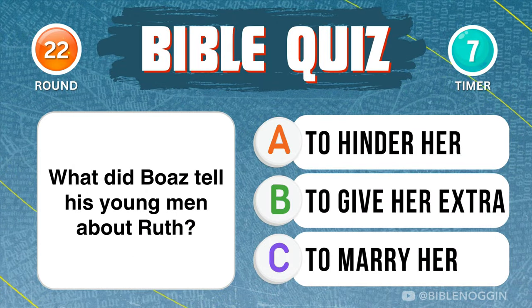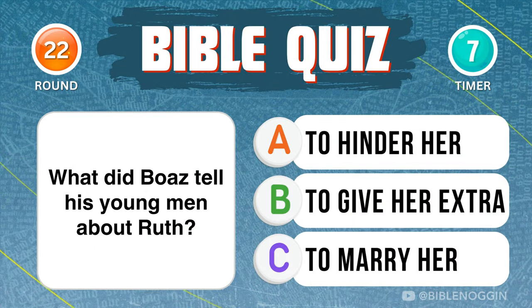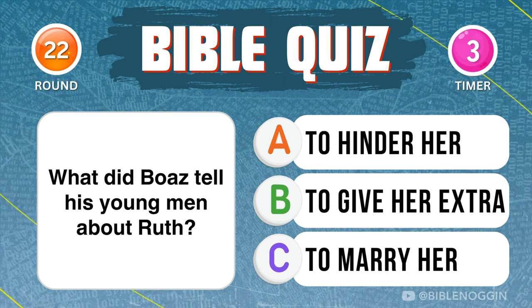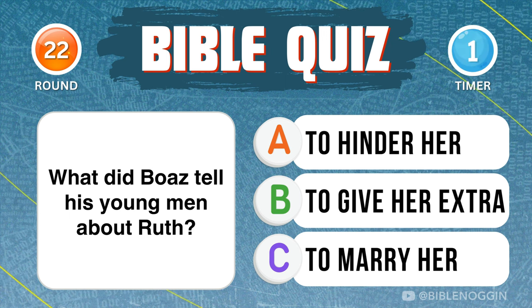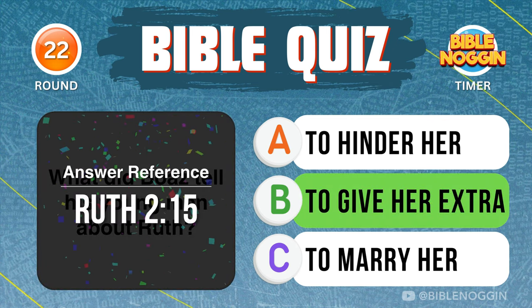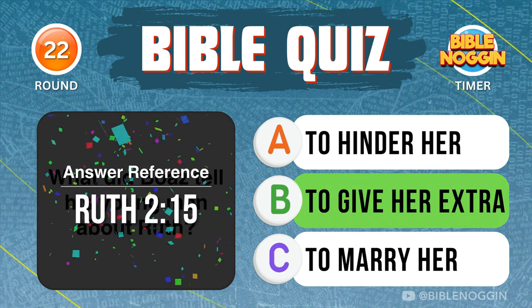Question 22: What did Boaz tell his young men about Ruth? To give her extra — found in Ruth chapter 2, verse 15.